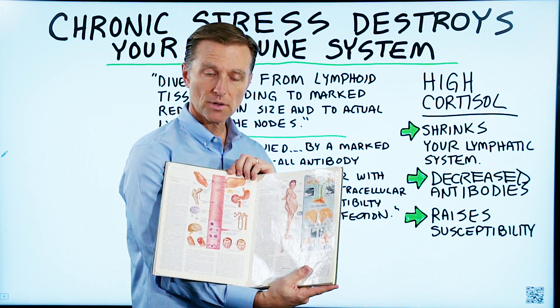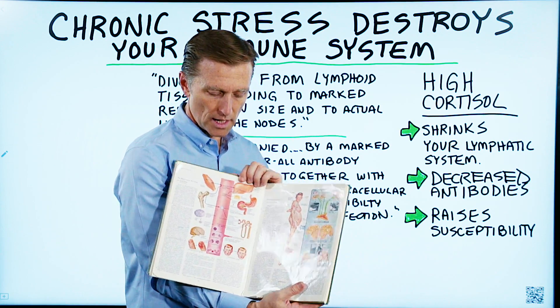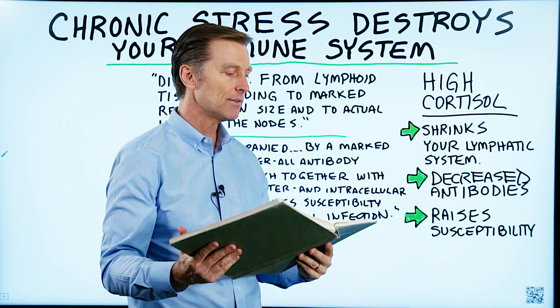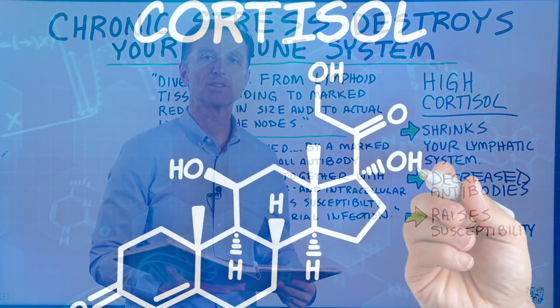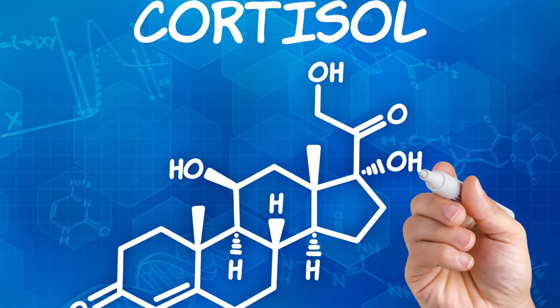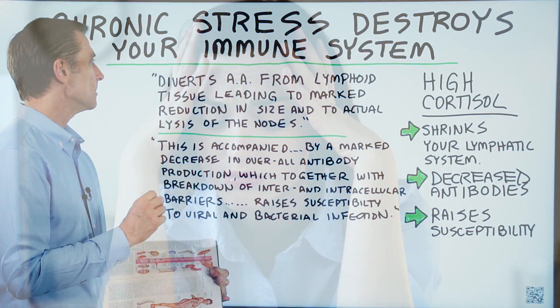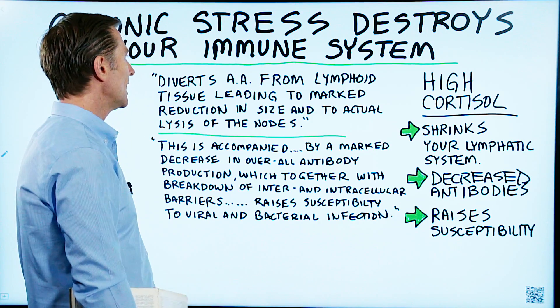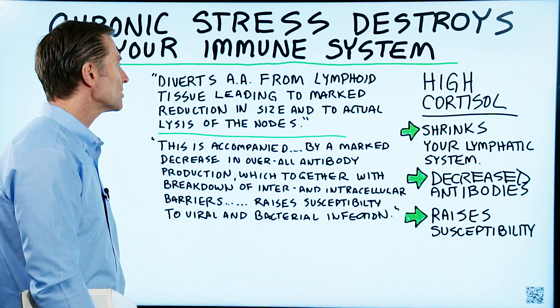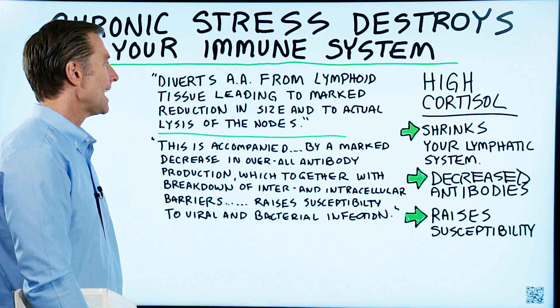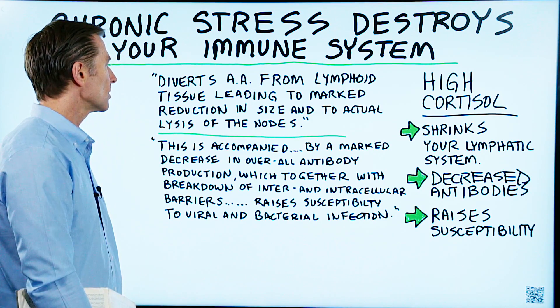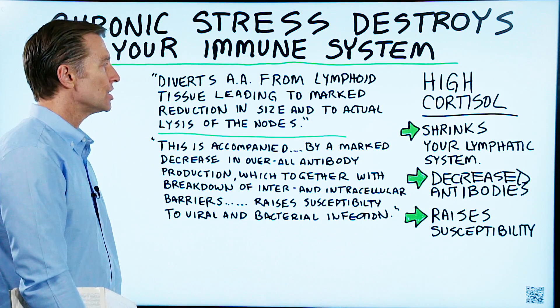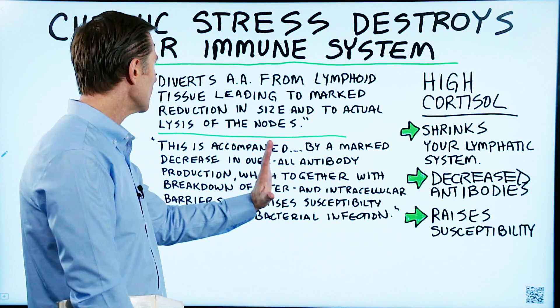He's talking about the function of cortisol and what happens if you have too much cortisol, which is activated by stress. So I wrote down on the board exactly what it says: it diverts amino acids from lymphoid tissue, leading to a marked reduction in size and to actual lysis of the nodes. Now let me explain what this means.